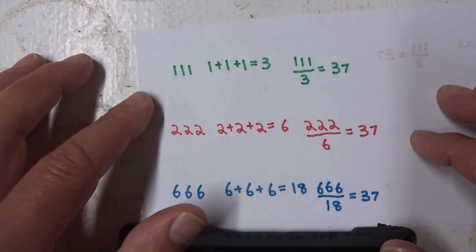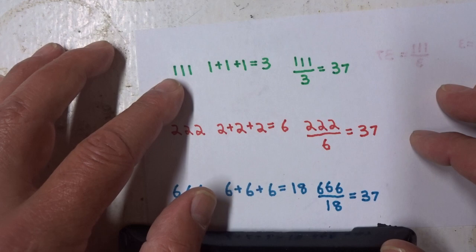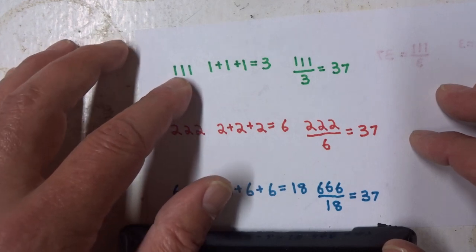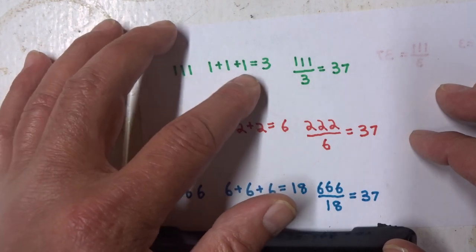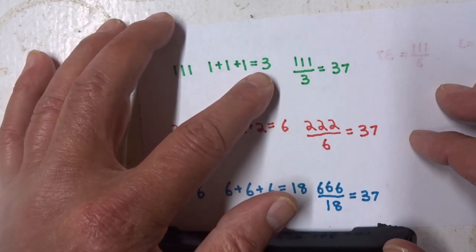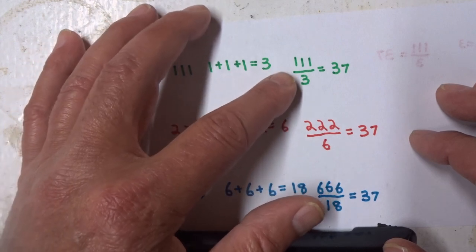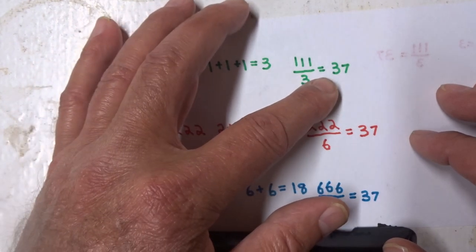Here's the demonstration. If you take any three numbers, 111, and you add each digit together, you get a number 3. If you divide 111 by 3, you get 37.